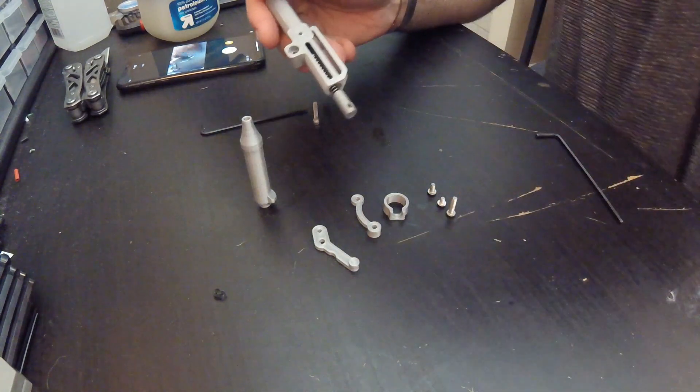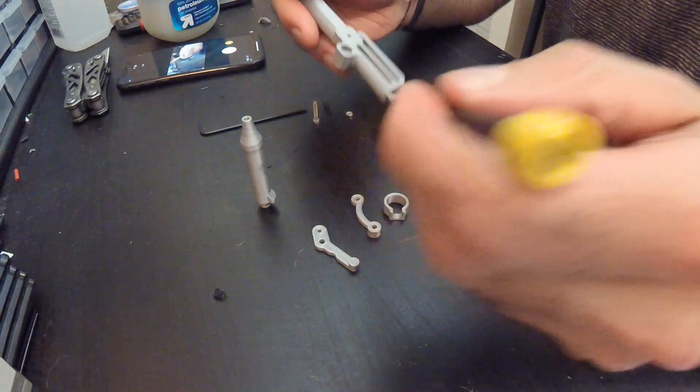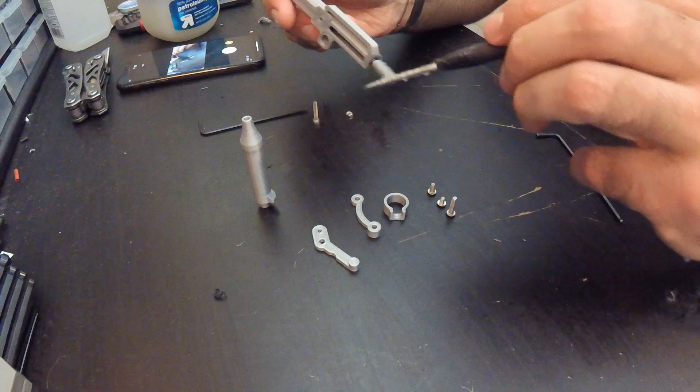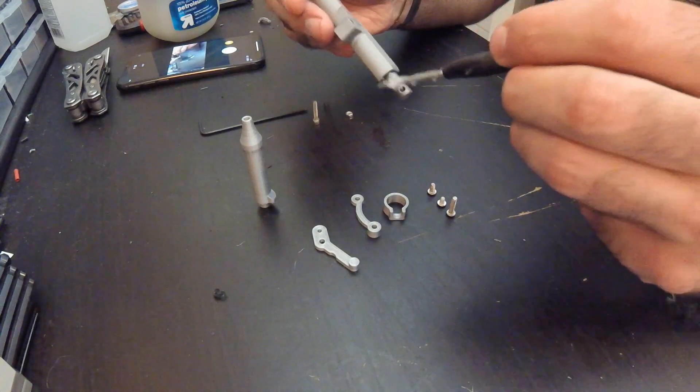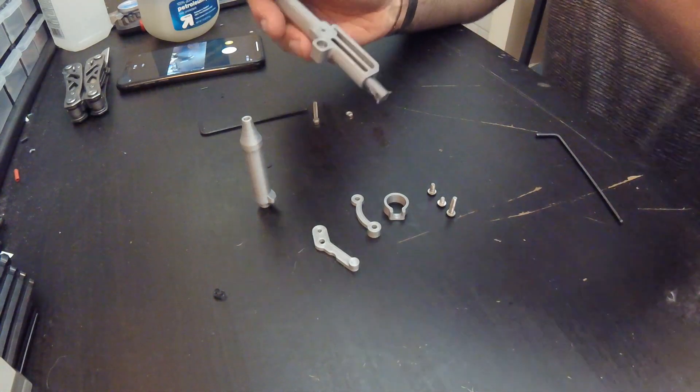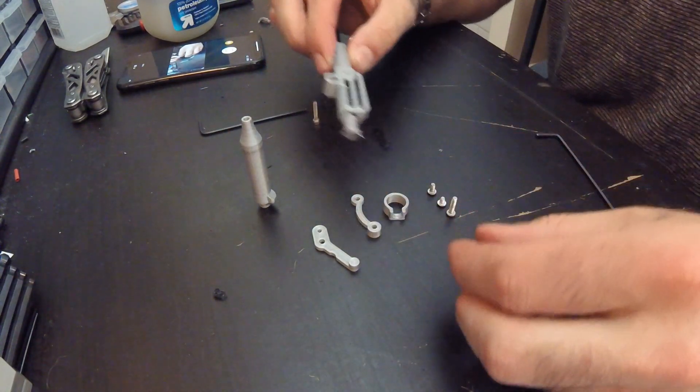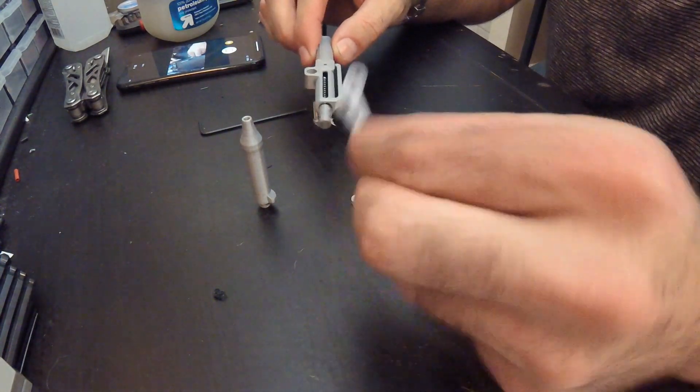What I'd like to do now is throw some Vaseline just to make sure it's a smooth action. Good enough, don't need much. So next we're gonna be building the linkage system which starts with the handle.